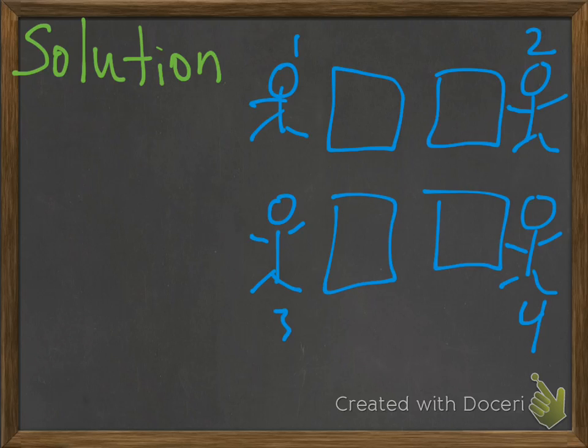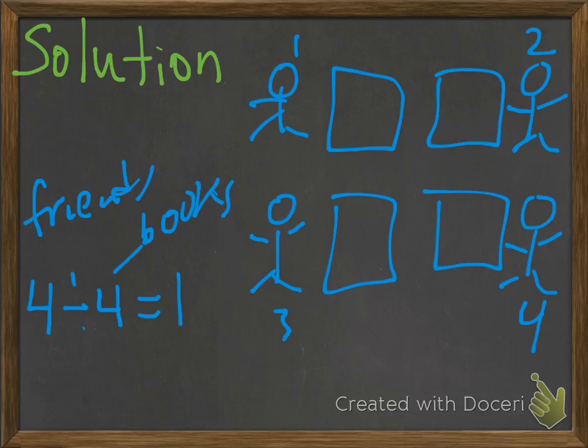So as we can see here, each friend is going to get one book. And here's the equation: 4 divided by 4 equals 1. So this is the four friends, four books, and they're going to be divided or shared equally, so they each get one.